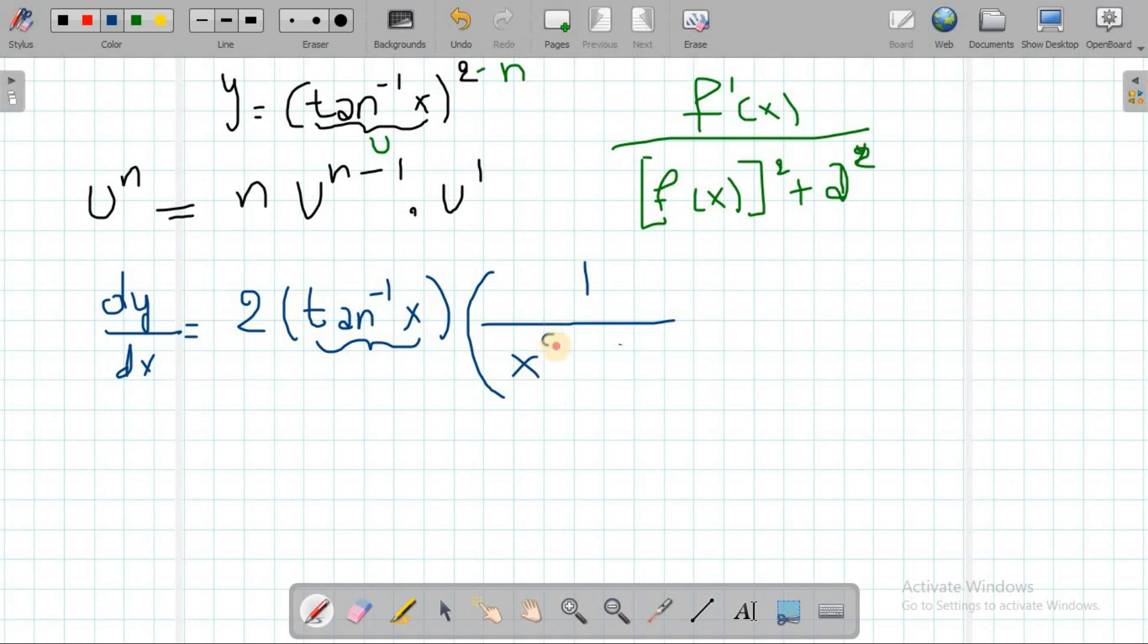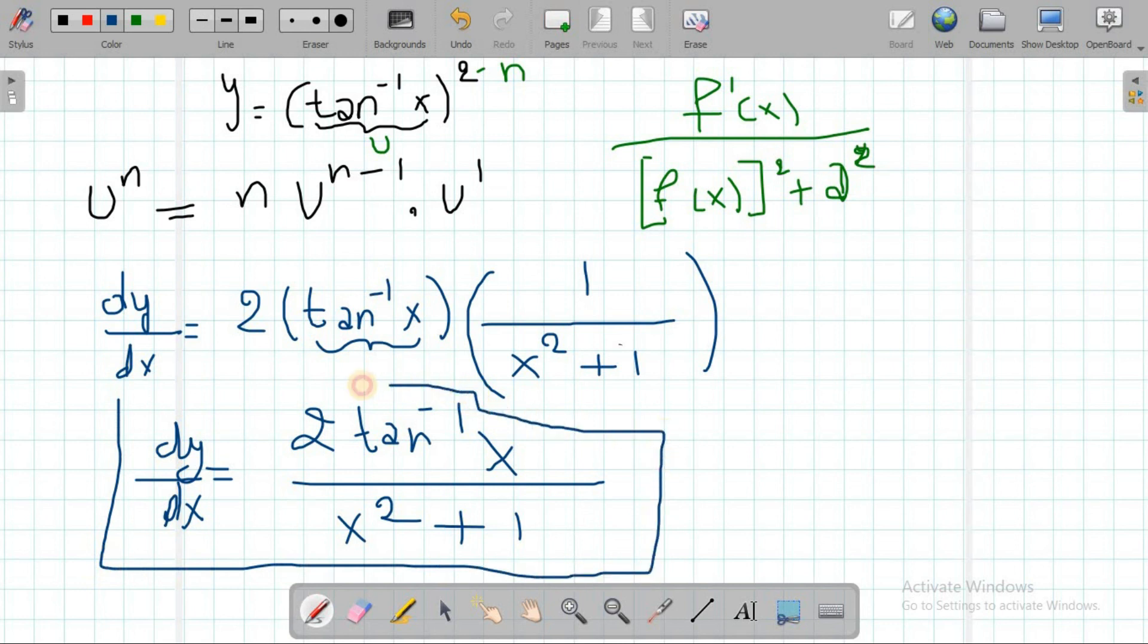So let me erase this one. We're going to have what? 1 on top over function f(x) squared plus 1. So this is the answer. So I can write it tan inverse x, whatever doing here, so 1 times minus 1 x, everything divided by x squared plus 1, my dy over dx.